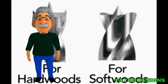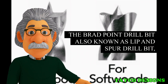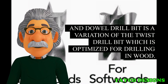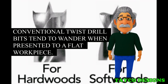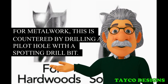Wood Drill Bits. Brad Point Bit. The brad point drill bit, also known as lip and spur drill bit and dowel drill bit, is a variation of the twist drill bit which is optimized for drilling in wood. Conventional twist drill bits tend to wander when presented to a flat workpiece. For metalwork, this is countered by drilling a pilot hole with a spotting drill bit. In wood, the brad point drill bit is another solution.